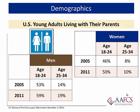Similar increases were shown among the age group of 25 to 34. Among women ages 18 to 24, 50% were living with their parents in 2011, up from 46% in 2005. Likewise, there has been an increase of women ages 25 to 34 living with their parents compared to six years ago. It is striking that one in five men ages 25 to 34 are living with their parents, compared to one in ten women in the same age group.